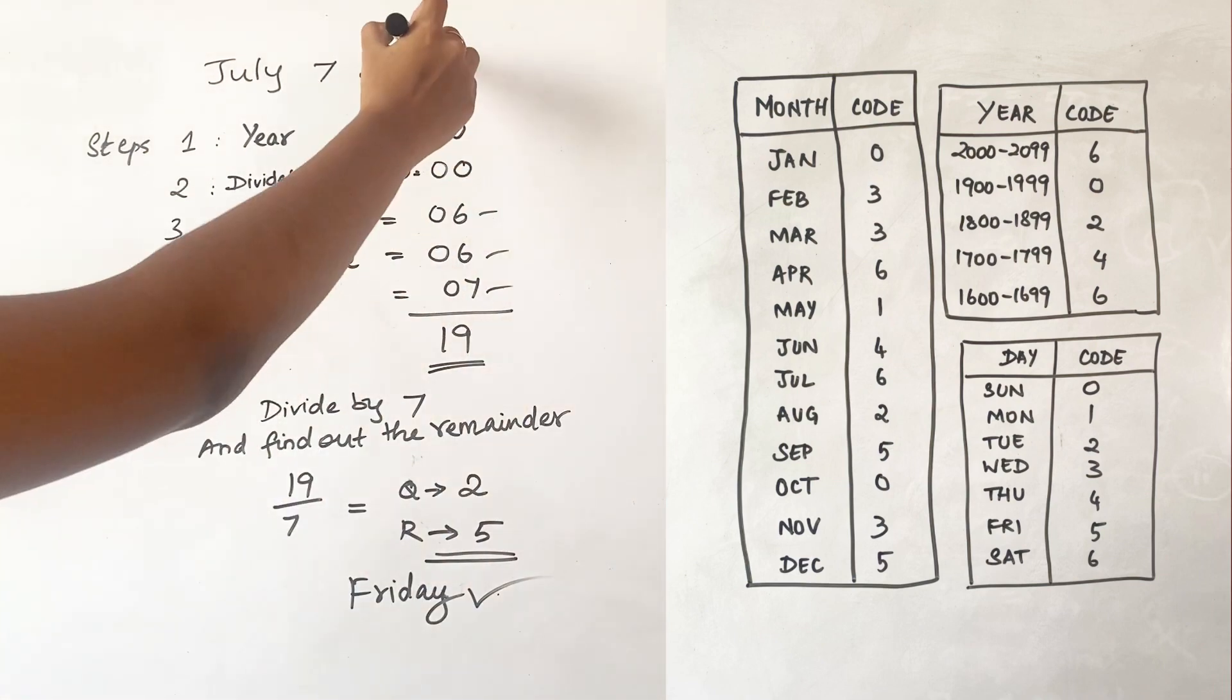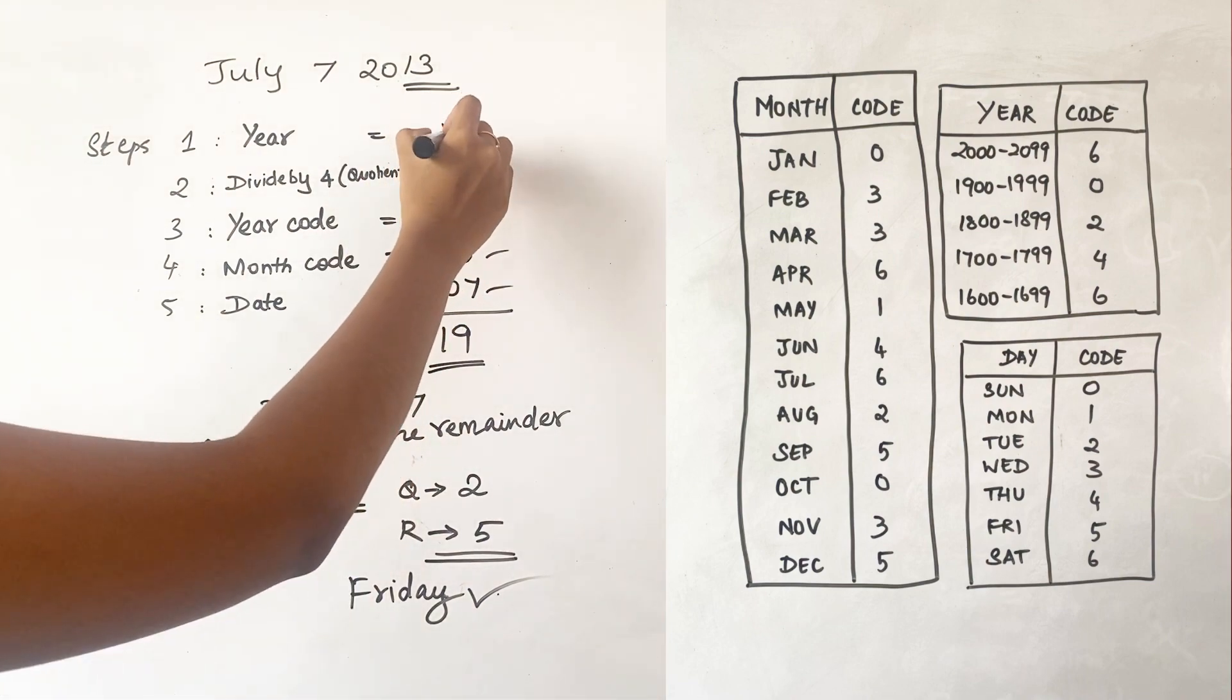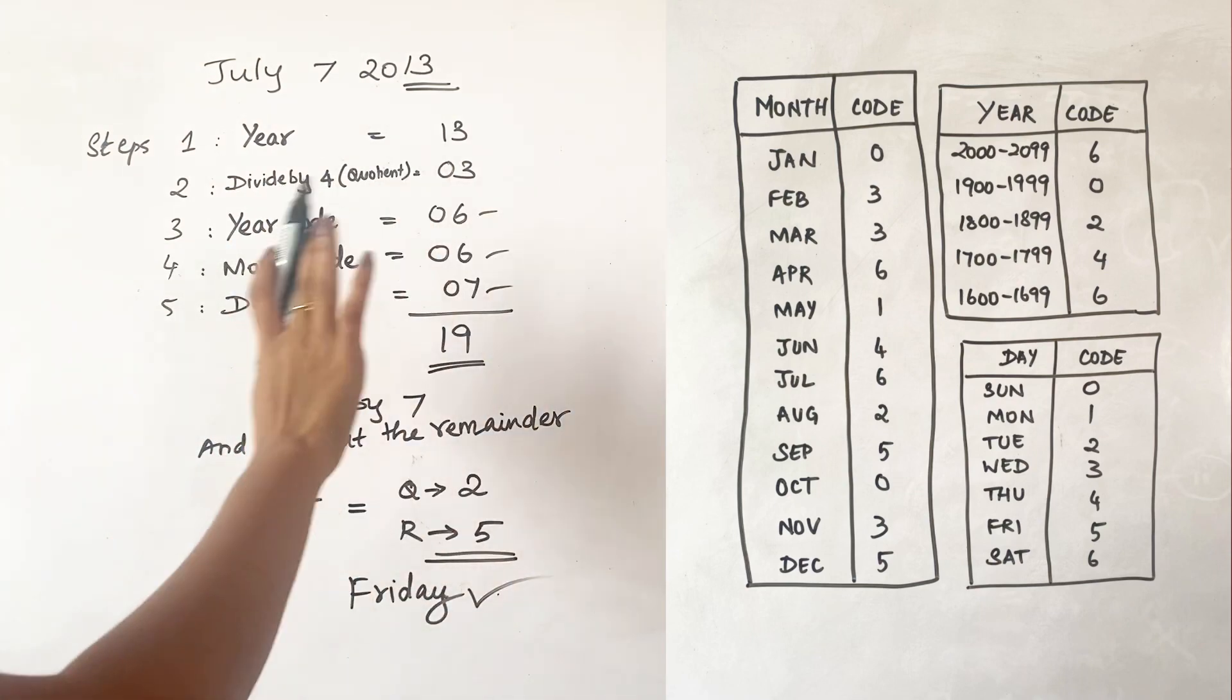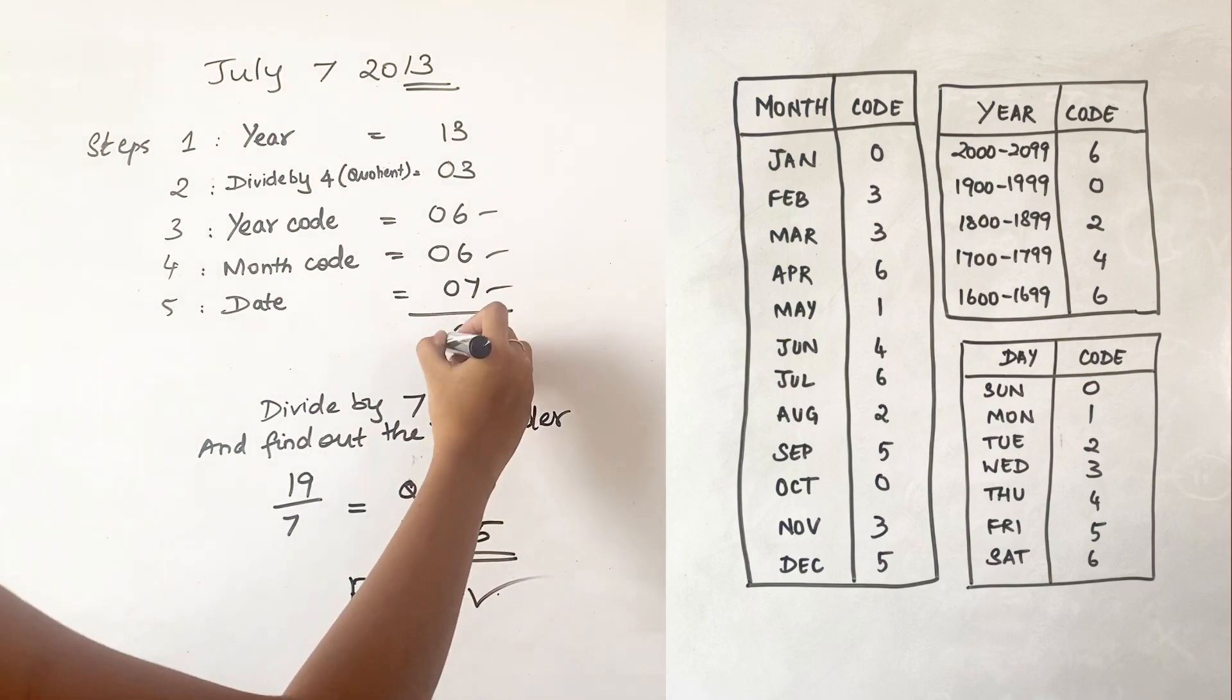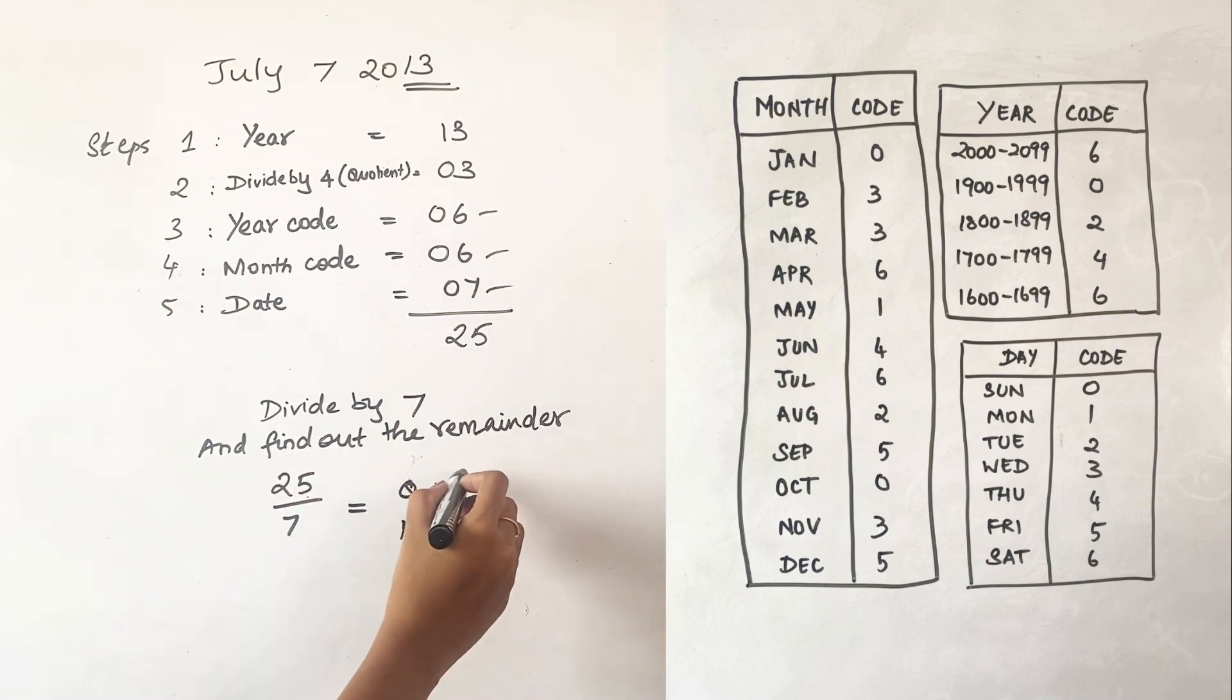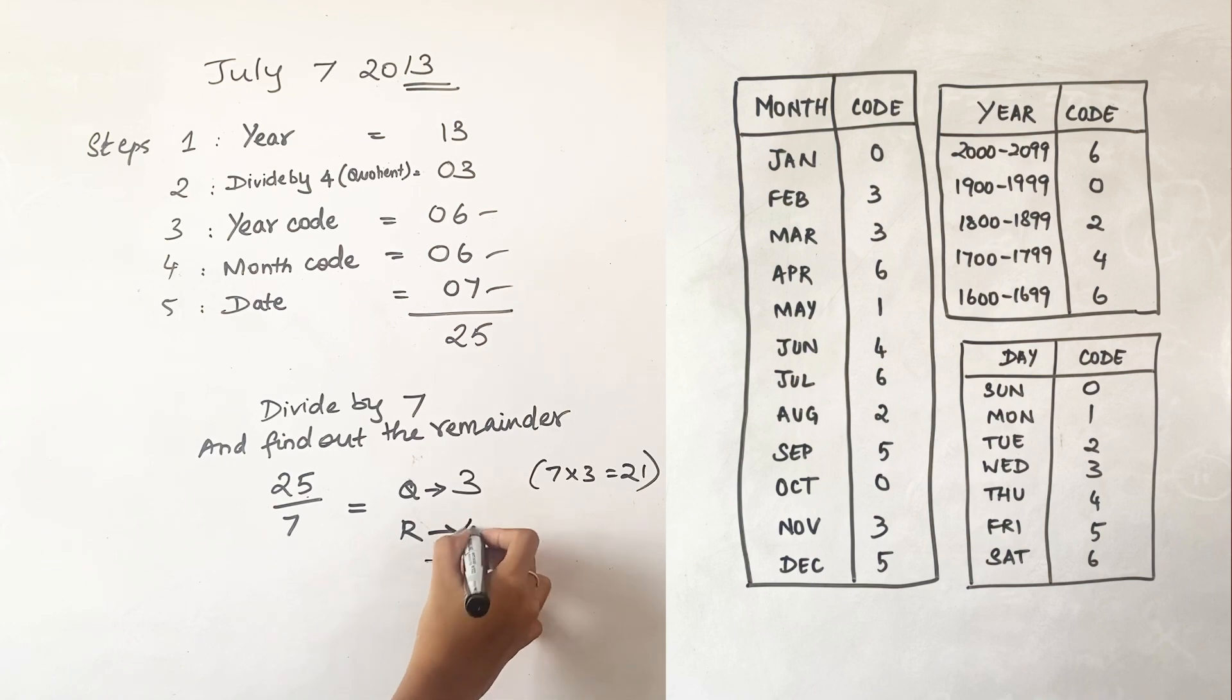Now let's try and solve the same sum with a different year. Let's take 2013 for example. Let July 7 be as such, so now the year will become 13. When dividing 13 by 4, we just have to write the quotient, which is 3, because 4 threes are 12. All the other three values are going to be the same. Now the total will become 25. We have to divide 25 by 7 and take the remainder out. So 25 by 7, the quotient is 3 because 7 threes are 21, and the remainder is 4. What is the code of 4? It's Thursday. So 4 is Thursday. Hence the answer for July 7, 2013 is Thursday.